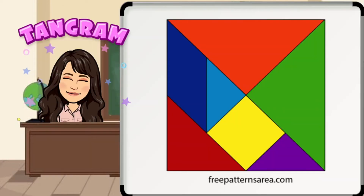A tangram is an ancient Chinese puzzle with seven specific pieces that fit perfectly together to form a square. Those seven pieces are two large triangles, one medium triangle, two small triangles, a square, and a parallelogram.